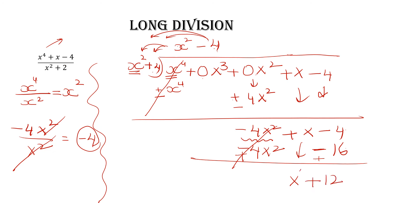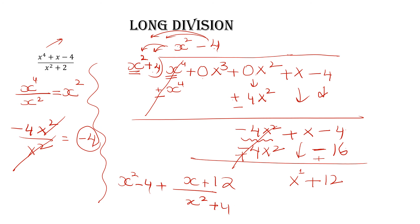The first term of the remaining dividend is x, which has degree 1, whereas the divisor x²+4 has degree 2. Since the degree of x is less than the degree of the divisor, we stop doing the division operation. Write the quotient first: x²-4. Then plus remainder upon divisor: (x+12) over (x²+4). Hope you understand — practice such questions in order to make yourself perfect.